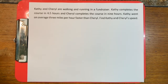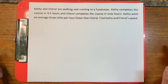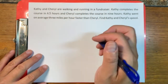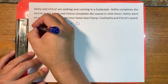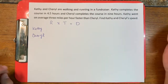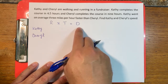Kathy and Cheryl are walking and running in a fundraiser. Kathy completes the course in 4.5 hours and Cheryl completes the course in 9 hours. Kathy went on average 3 miles per hour faster than Cheryl. Find Kathy and Cheryl's speed. This is a typical problem where we have two people traveling. In all of these problems we'll use rate times time equals distance twice — once for each person — and by comparing them we'll find the answer. Go slowly sentence by sentence and find the speed, time, and distance listed.